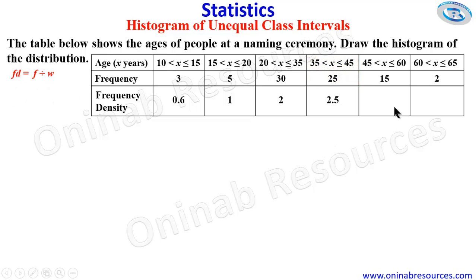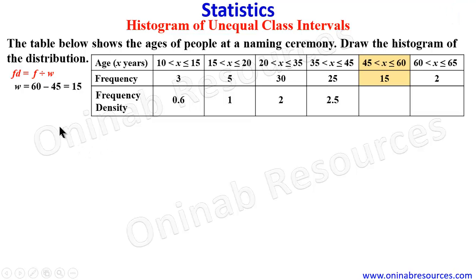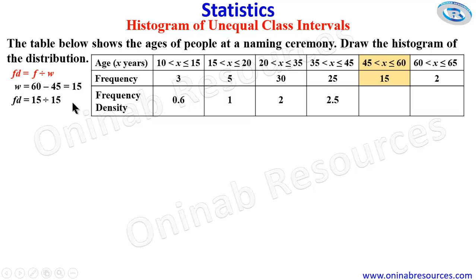We go to the next class interval, which is 45 to 60. The width is 60 minus 45, which gives 15. The frequency is 15, so 15 divided by 15 gives 1. The frequency density there is 1.